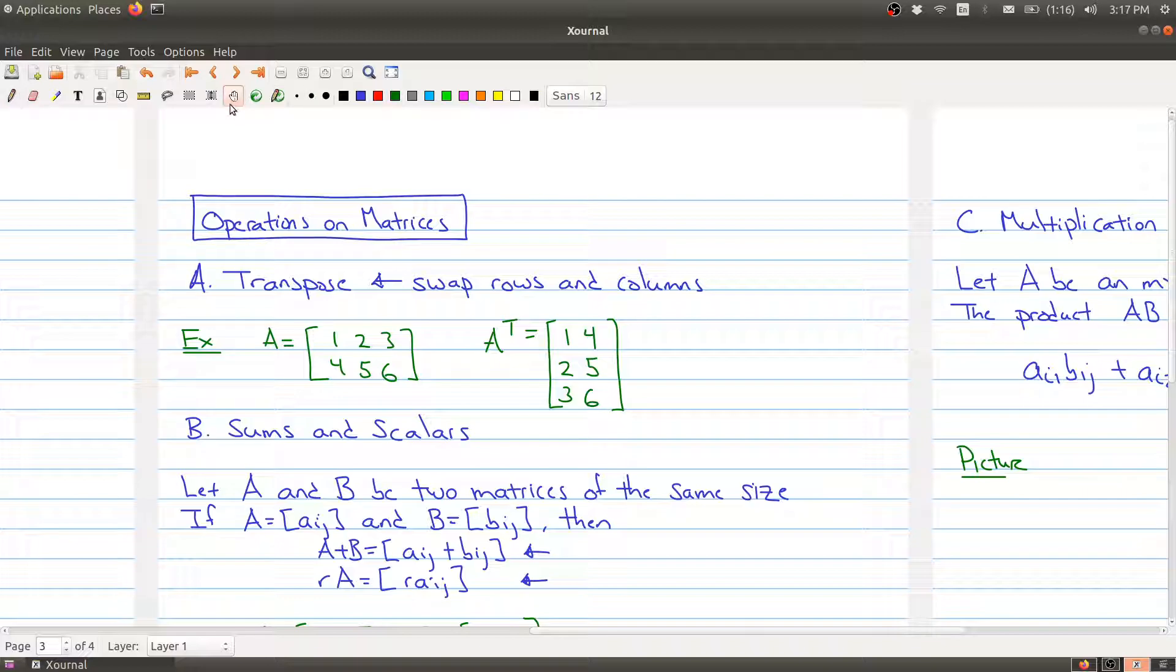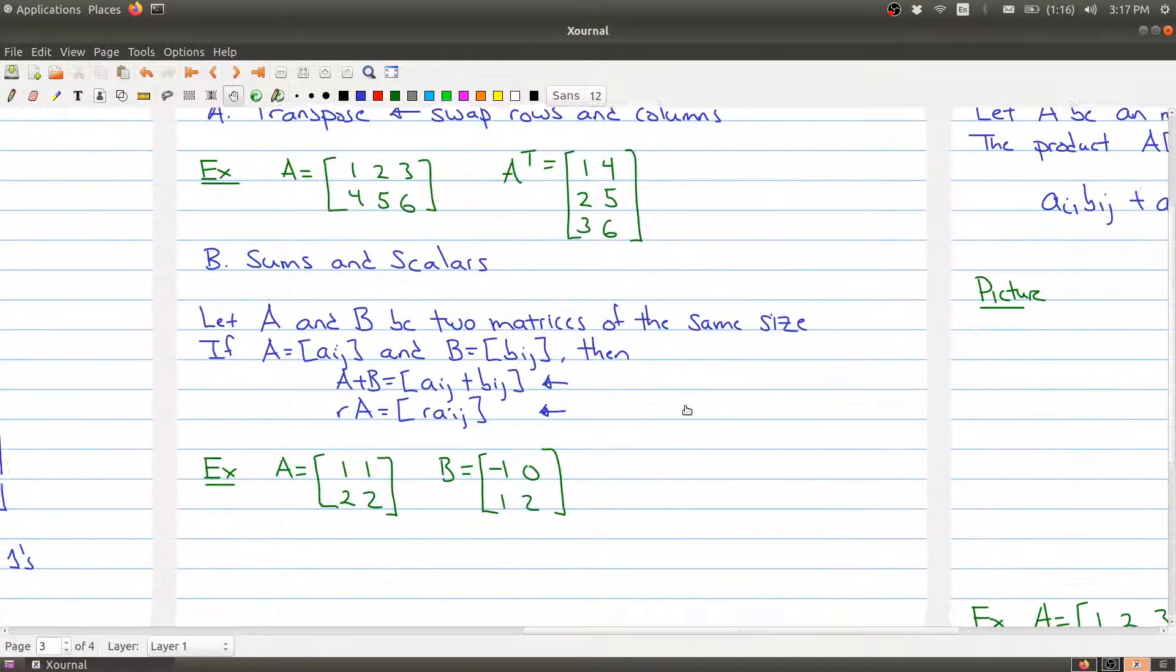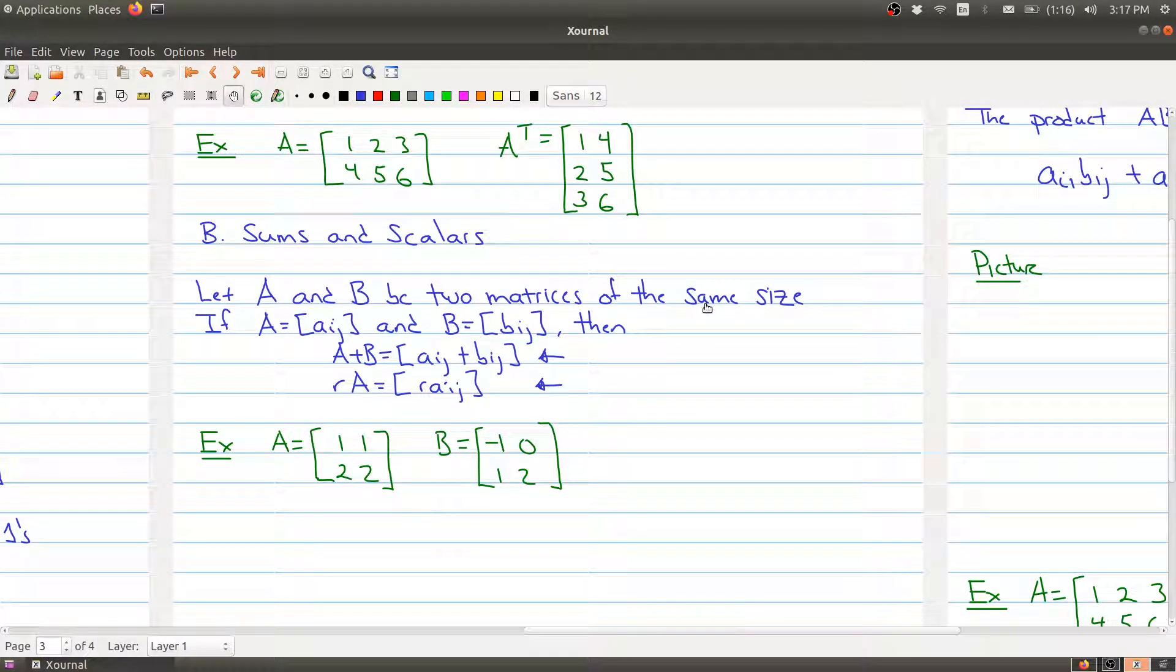Sums and scalars are also pretty straightforward to define. In this situation, you have two matrices and it's important that they have the same size in order to define addition. When you want to add your two matrices together, the sum is just adding entries. Entries in the same spot get added together. You add the ijth entries, and we'll make this clearer in a second with an example.